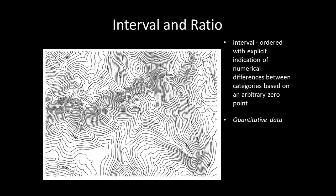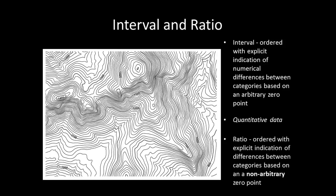Ratio data are similar to interval, except that there is a non-arbitrary zero starting point as the basis for measurement. Ratio data examples include temperature measured on the Kelvin scale, age, and weight. Ratio is also a form of quantitative data measurement. Now that we have discussed data measurement, I will next talk about how data measurement translates into specific visual elements of a map and how they are represented.